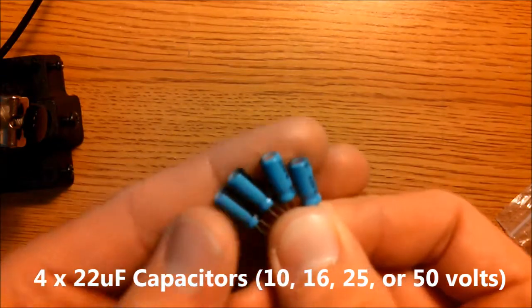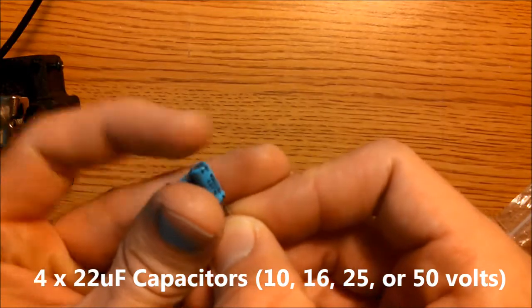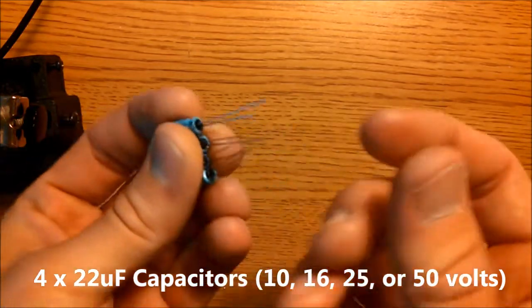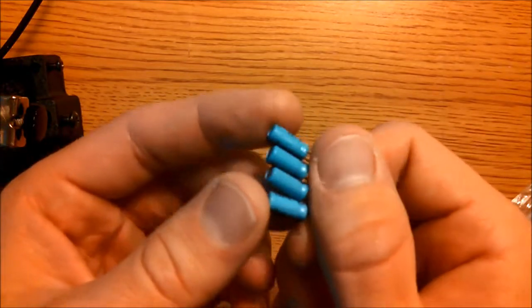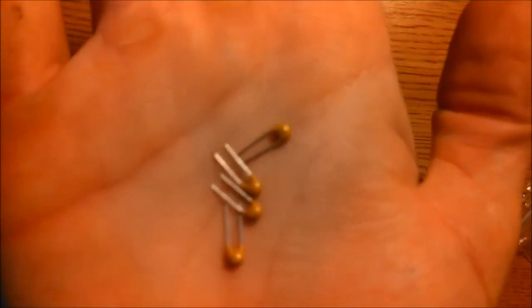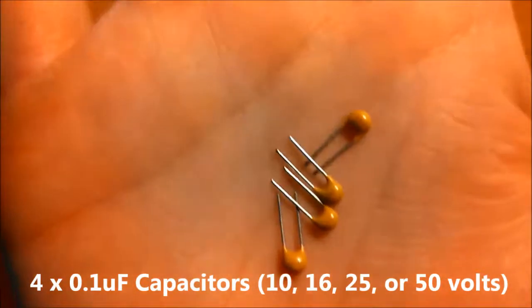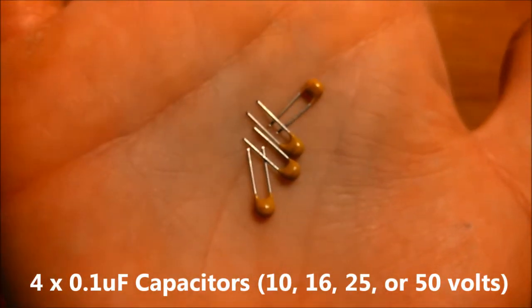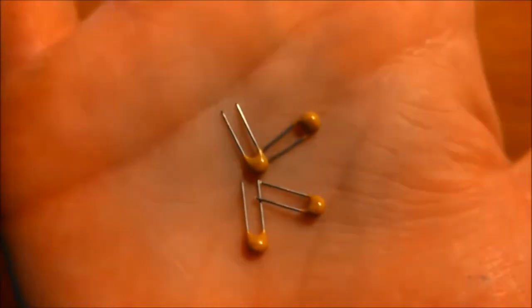You will need 4 22 microfarad capacitors. The voltage isn't very critical as long as it's 10 volts or above. It could be 10 volts, 16 volts, 25 volts, or 50 volts. It doesn't really matter as long as they are electrolytic and 22 microfarads. You will need 4 0.1 microfarad capacitors. These are ceramic and the voltage also doesn't really matter, as long as they are 10 volts and above. It's not too critical.